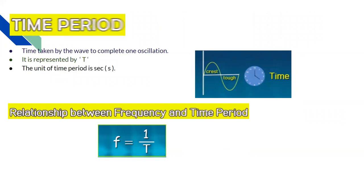Now let us study the fourth characteristic of sound, that is known as the time period. What is time period? Time taken by the wave to complete one oscillation is known as the time period of that sound wave. One oscillation means one crest and one trough. It is represented by capital T and the unit of time period is seconds, represented by small s. Now what is the relationship between frequency and time period? The number of oscillations is equal to the frequency.